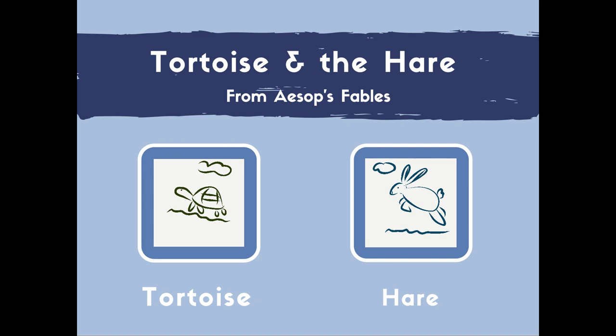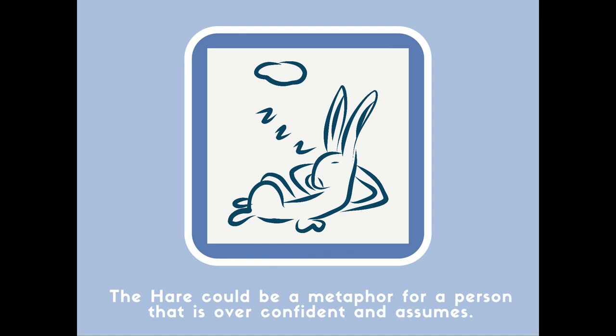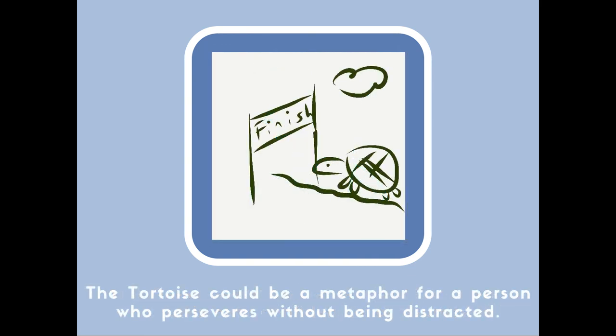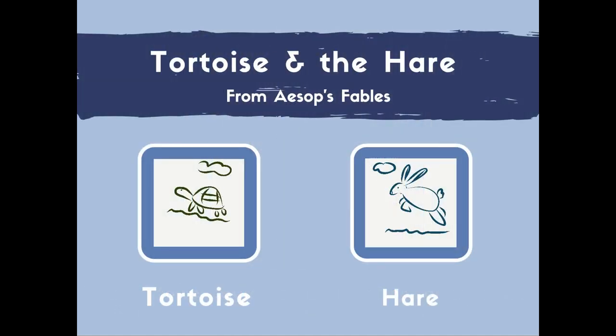Aesop was able to teach the old adage 'slow and steady wins the race' through these beautiful characters using metaphors. In the story, the hare would be seen as a metaphor for a person who is overconfident and assumes, while the tortoise could be seen as a metaphor for someone who perseveres without being distracted. Do you notice how Aesop used these animals to imply these comparisons? That is the magic of a metaphor.